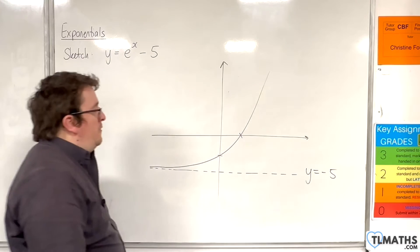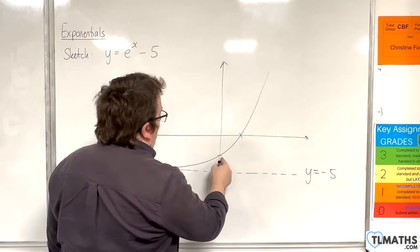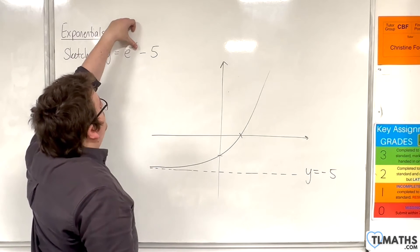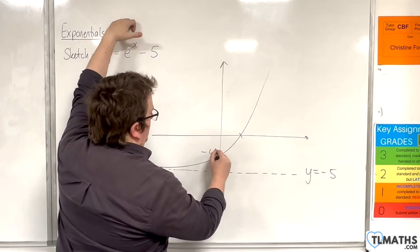So we've got two points of interest where it crosses the x-axis and where it crosses the y-axis. Now it crosses the y-axis when x is 0, so e to the 0 take away 5 is 1 take away 5 which is minus 4, so that's minus 4.